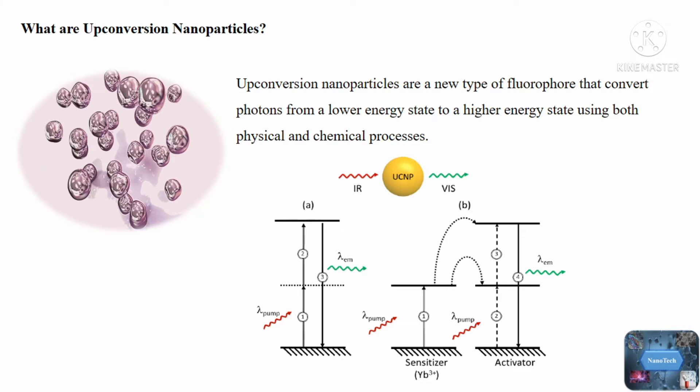How upconversion nanoparticles work. The mechanisms of upconversion nanoparticles differ from those of other luminescence mechanisms. Most other luminescence processes involve a single electron that is excited from the ground state to the excited state. In comparison, upconversion nanoparticles work on various low-energy photons to accumulate the low-energy excitation photons.